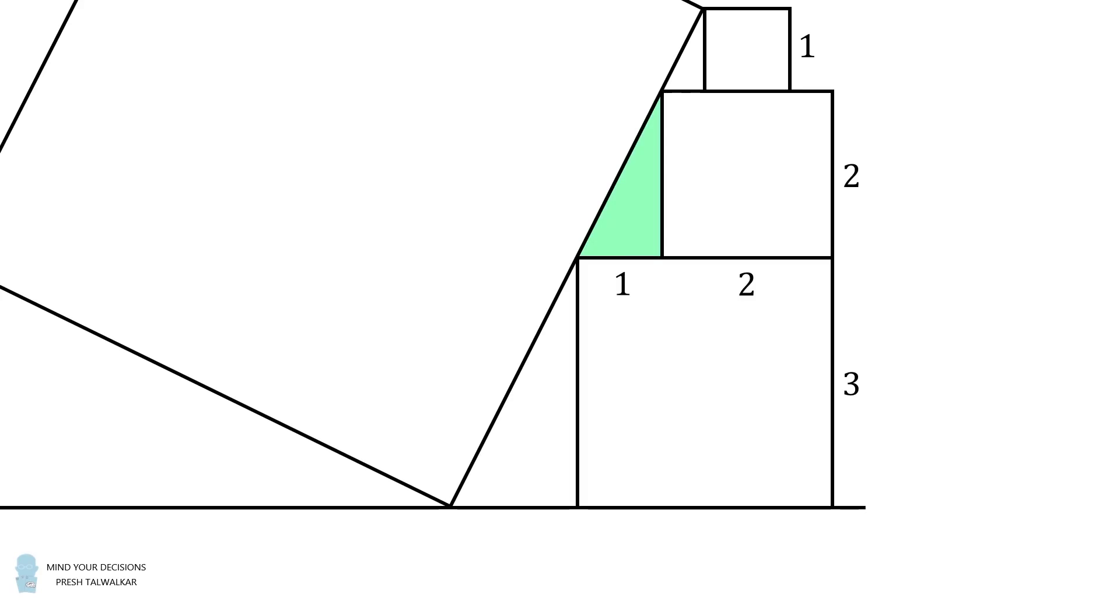Now focus on this right triangle. Its short leg is equal to 1, and its longer leg is equal to the side of the middle square, which is 2.